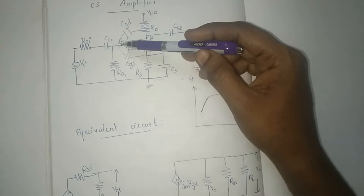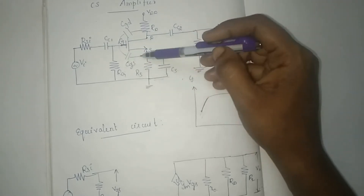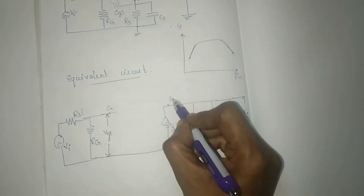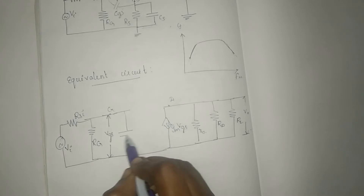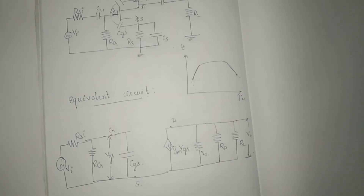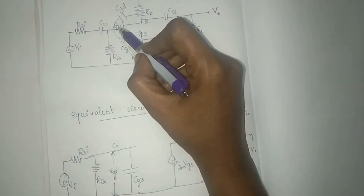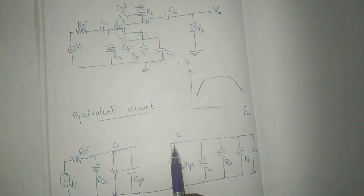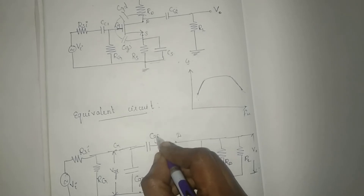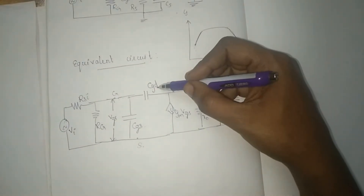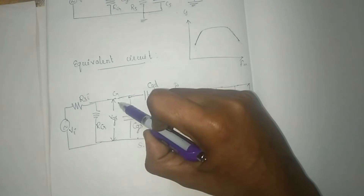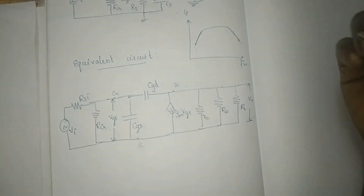In high frequency analysis we consider the effect of two capacitors. The first capacitor is connected between the gate and source — this is the gate terminal, the drain terminal, and the source terminal. CGS is connected between gate and source. CGD is connected between gate and drain. Gate is the input terminal and drain is the output terminal.